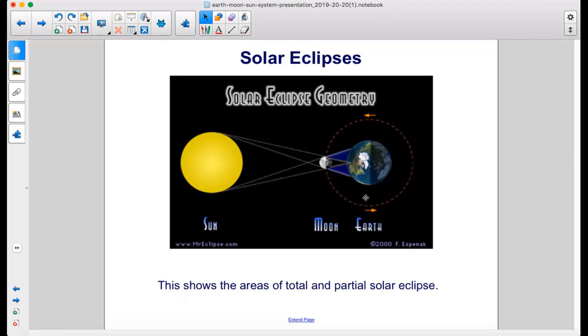This shows the areas of total and partial solar eclipse. Here you can see partial solar eclipse here and here, and then right in this small spot is the total solar eclipse.